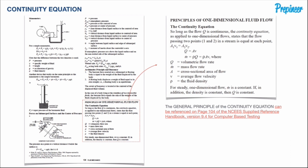The continuity equation as stated in the NCES reference handbook says: so long as the flow Q is continuous, the flow passing through two points one and two in a stream is equal at each point. So Q1 equals Q2, or equivalently A1V1 equals A2V2, since Q equals AV.